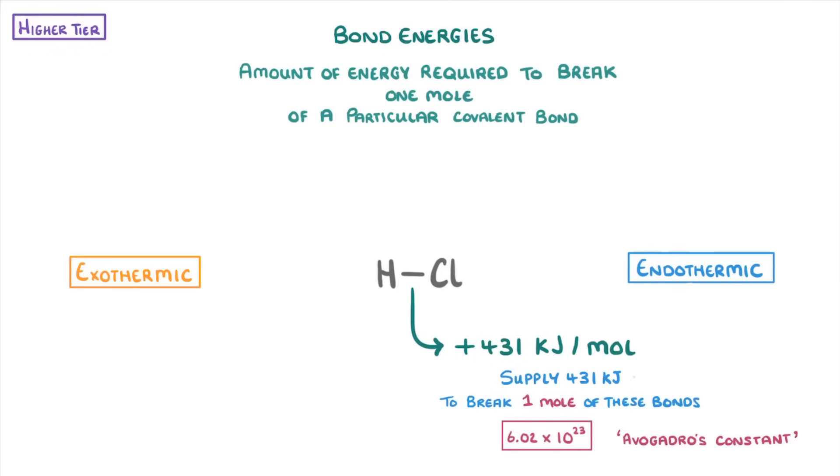So breaking bonds is actually an endothermic process because it requires energy from the surroundings. On the other hand, bond formation is exothermic. So if we were to form one mole of hydrogen chloride bonds, it would release 431 kilojoules of energy to the surroundings.